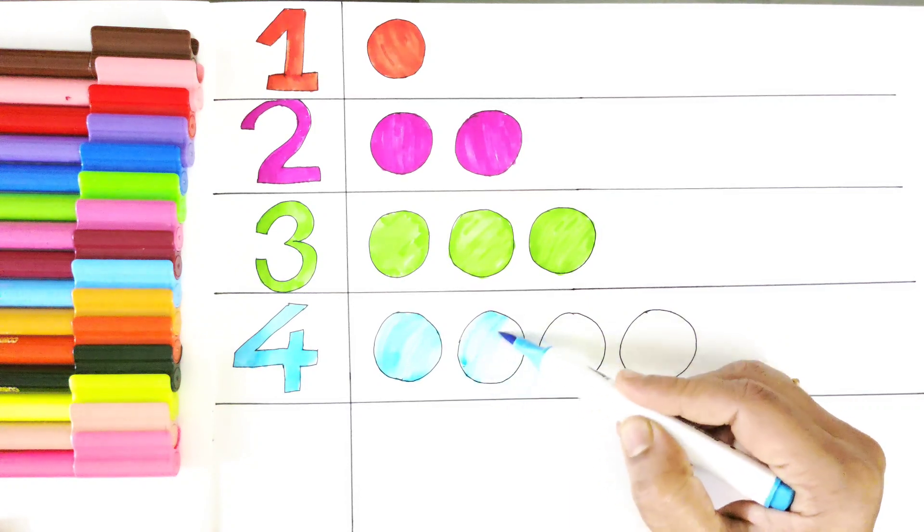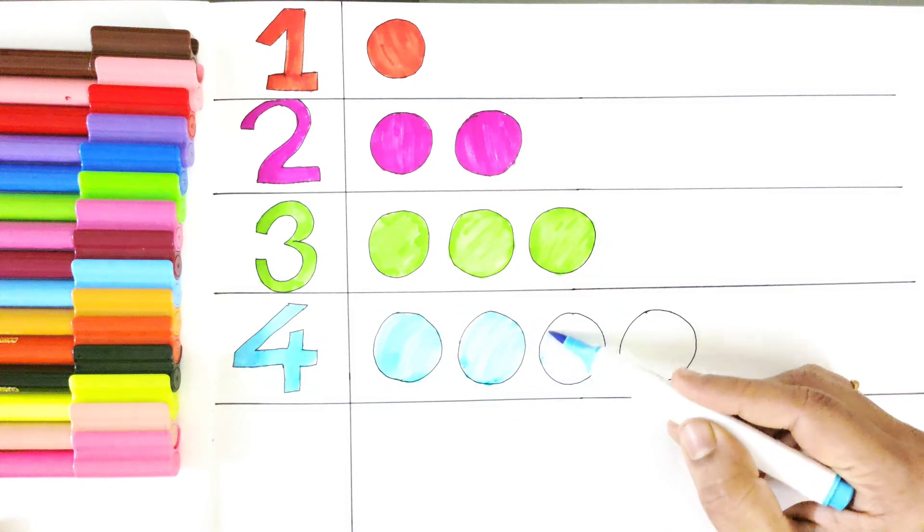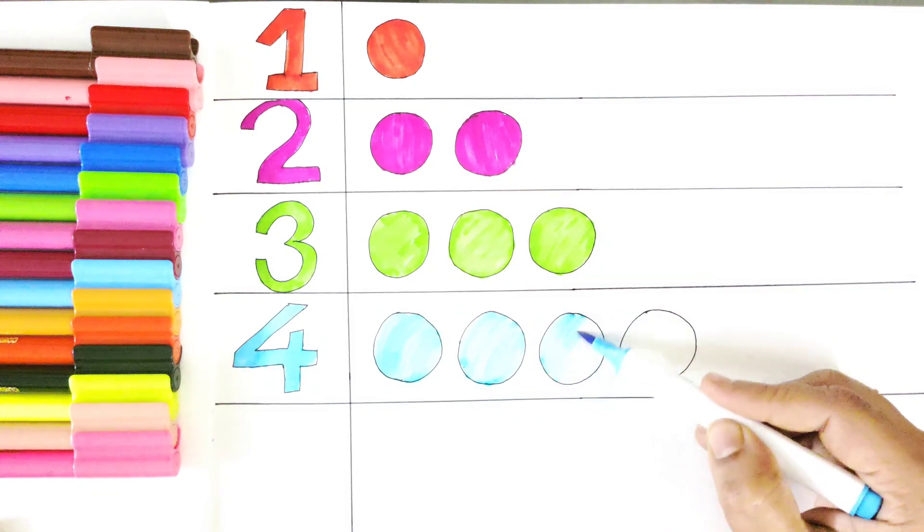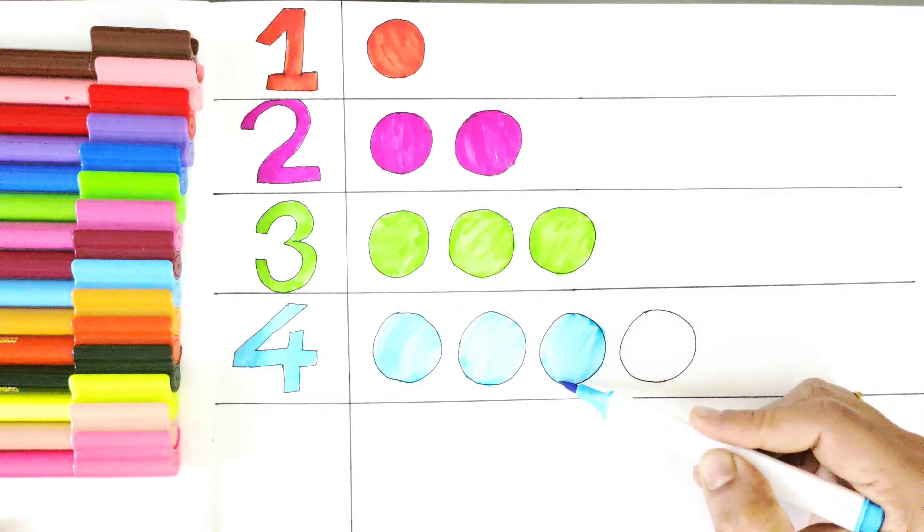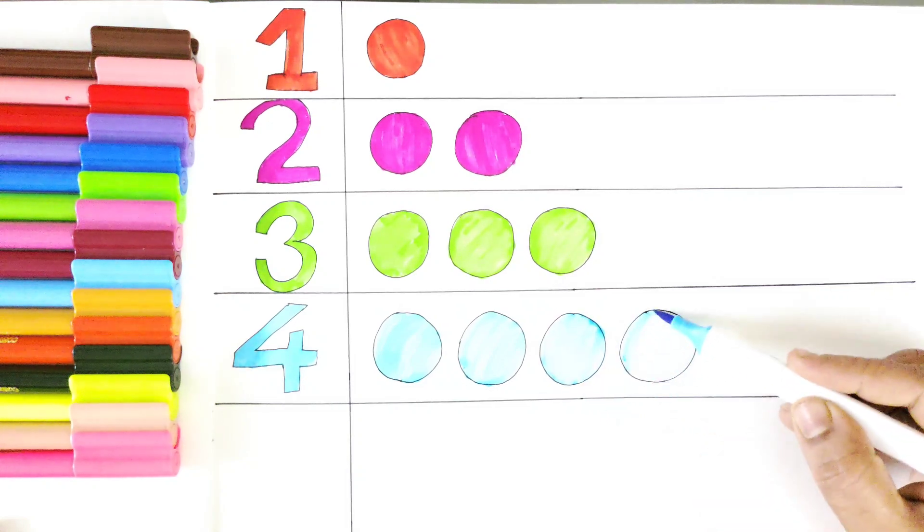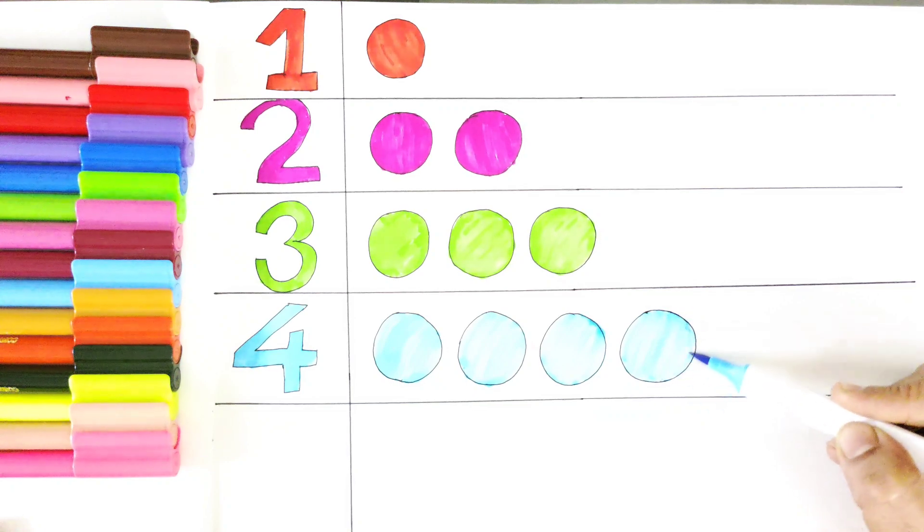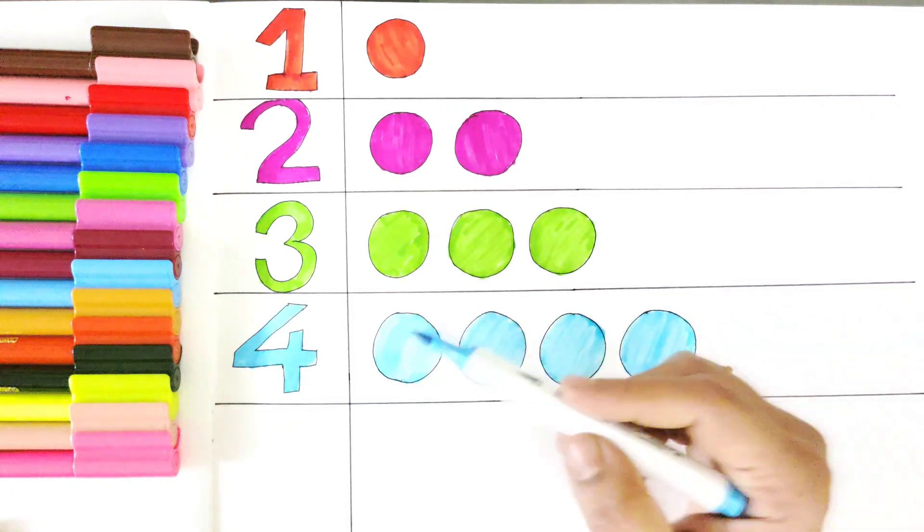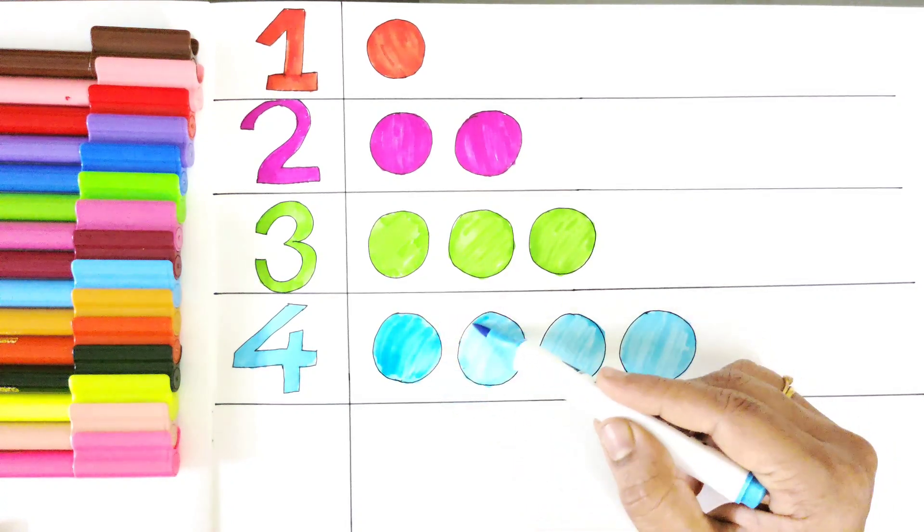One, two, three, and four. We have four blue color balls. Let's make a dark shade.